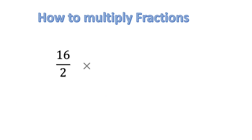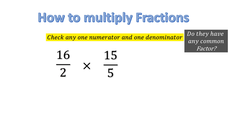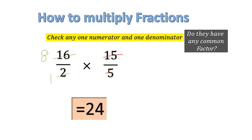Now let's try another fraction: 16 over 2 multiplied by 15 over 5. We again have numerators and denominators. Checking pairs: 16 and 5 have no common factor; 15 and 2 have no common factor. But 16 and 2 have common factors, and 15 and 5 also share a common factor. For 2 and 16: 2 times 1 is 2 and 2 times 8 is 16. For 15 and 5: 5 times 1 is 5 and 5 times 3 is 15. Now there are no more common factors between any numerator and denominator.